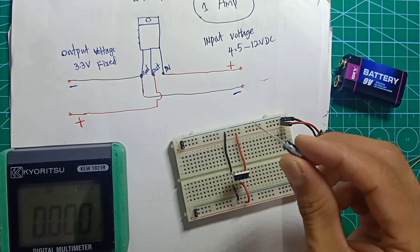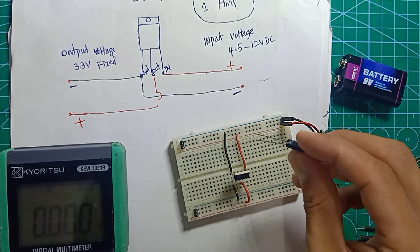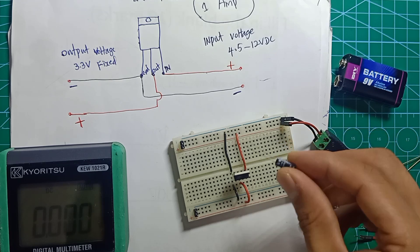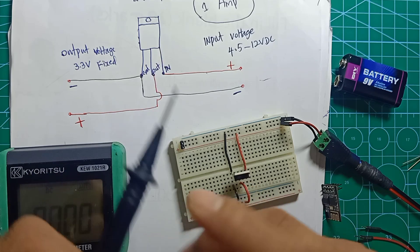To make it smooth, we can add one capacitor, either 10 microfarad, 22 microfarad, or 100 microfarad 25 volt. For the capacitor, there are two pins.